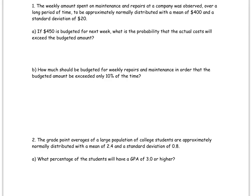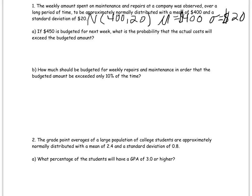The weekly amount spent on maintenance and repairs for this company was observed over a long period of time. The distribution was symmetric and bell-shaped and approximately normal, with a mean of $400 and a standard deviation of $20. I could write that as N(400, 20) to indicate it's normal with mean $400 and standard deviation $20. Just make sure you're up on all of these notational pieces.